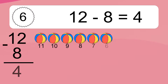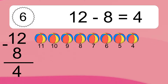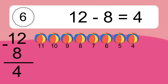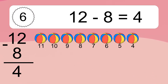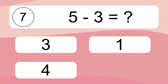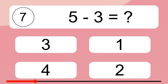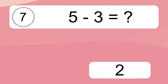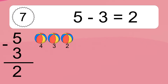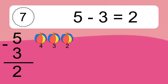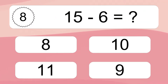12 minus 8 equals what? 12 minus 8 equals 4. Let's count it: 11, 10, 9, 8, 7, 6, 5, 4. 5 minus 3 equals what? 5 minus 3 equals 2. Let's count it: 4, 3, 2.